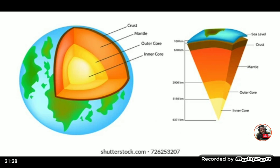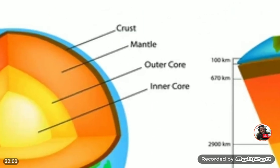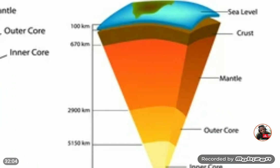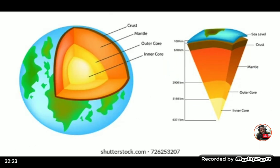On screen you can see a simplified version of the earth's structure, looking particularly at the solid parts. The outermost shell of the earth — the land on which we live — is called the crust, with the proper name being the lithosphere. Below that we have the mantle, and then the core divided into two regions: the outer core and the inner core.